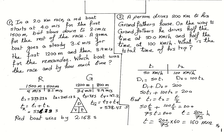In a 2.0 kilometer race, a red boat starts at 4.0 meters per second for the first 1,500 meters, then slows down to 3.1 meters per second for the rest of the race. A green boat goes at a steady 3.6 meters per second for the first 1,200 meters, then 3.9 meters per second for the remainder. Which boat wins the race and by how much time? Both boats move a total distance of 2,000 meters.